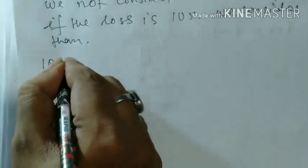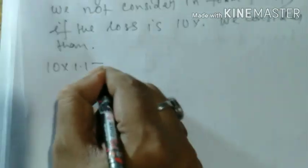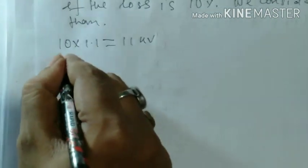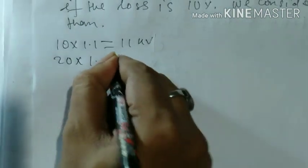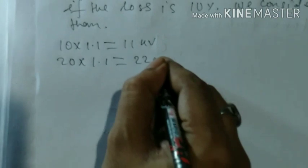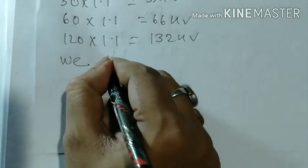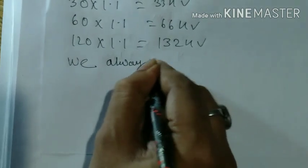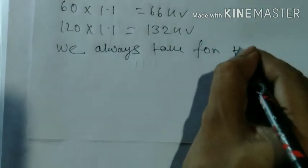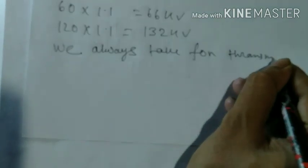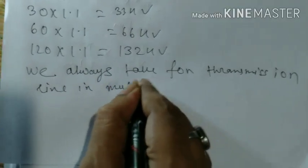We can analyze it by loss calculations. We know that distribution loss is always 10 percent, so we can multiply by 1.1. Ten into 1.1 we get 11, and 20 into 1.1 we get 22, 30 into 1.1 gives 33, 60 gives 66, and 120 gives 132.